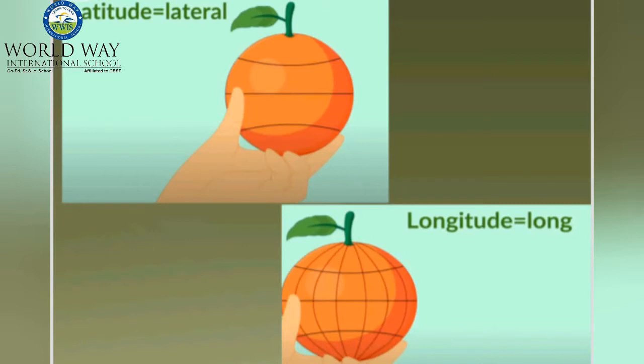If you are drawing horizontal lines, then that represents the latitude. And if you are drawing vertical lines, then it represents the longitude. So this is the easier way to understand latitudes and longitudes.